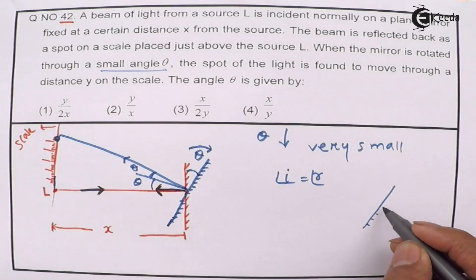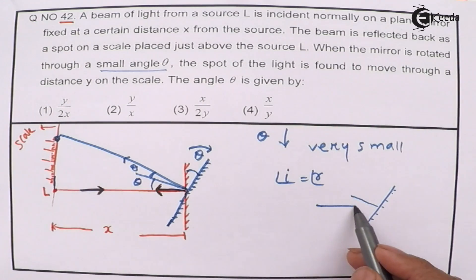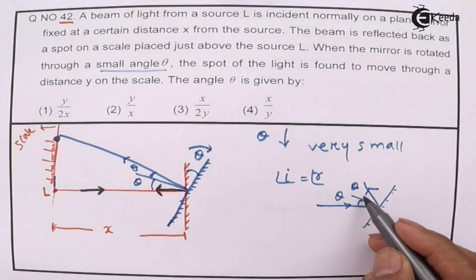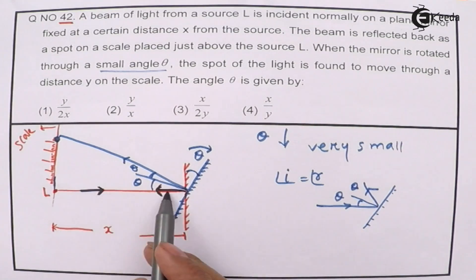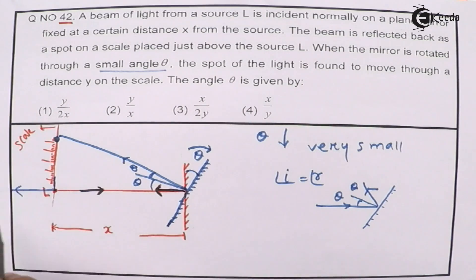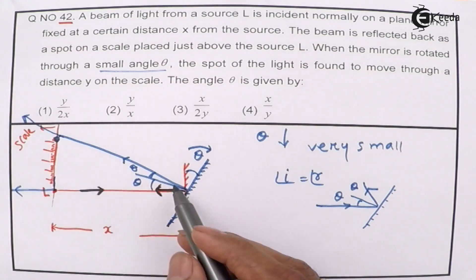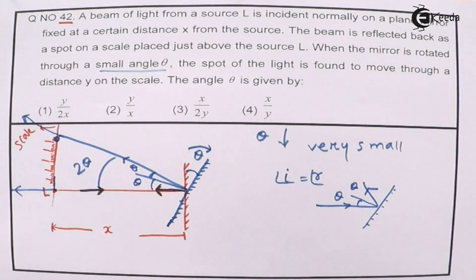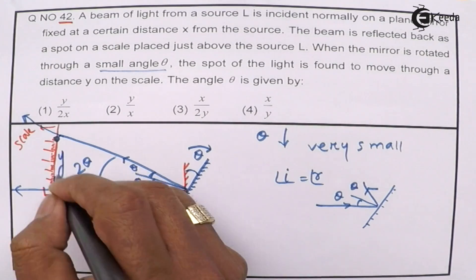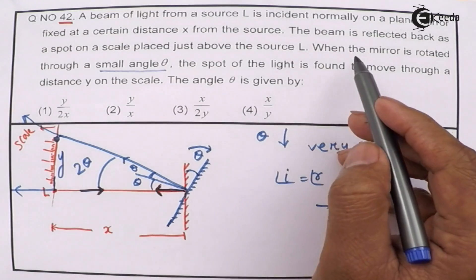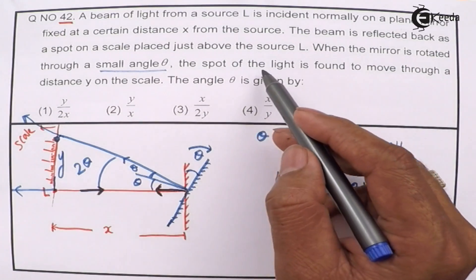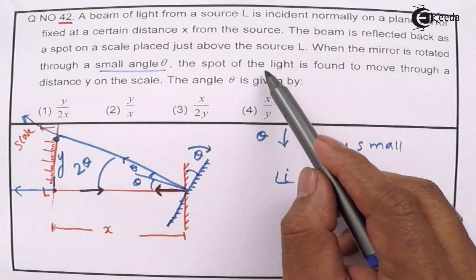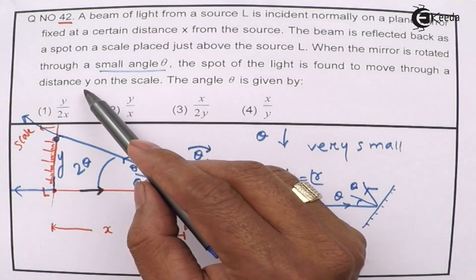The angle of incidence must equal the angle of reflection, so these two must be the same. When the mirror is rotated to the new position, the ray was coming at angle theta to the normal and is reflected back at angle theta — so the total angle between the original and new reflected ray is two theta. The spot of light is found to move through a linear distance Y on the scale.